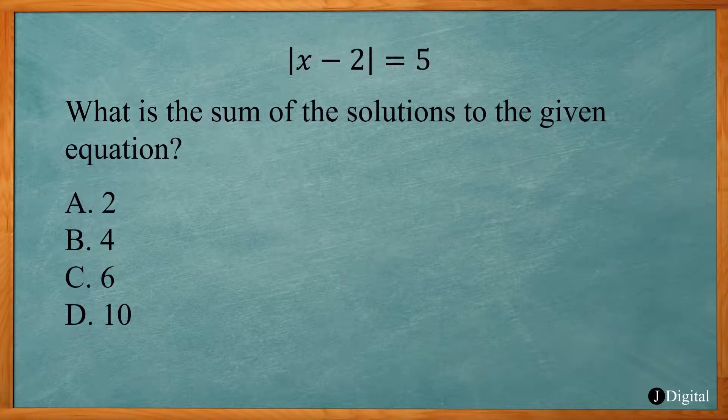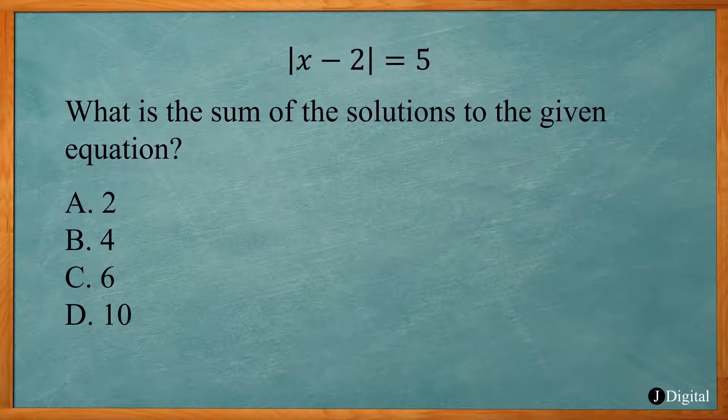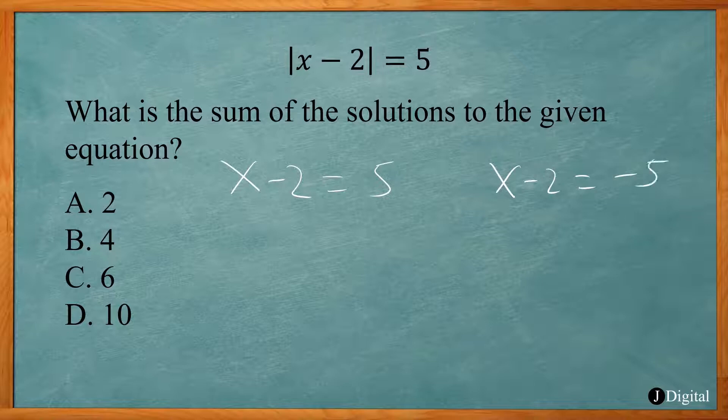Now in this example SAT problem, it's basically the same thing, but it's asking what is the sum of the solutions to the given equation. So again we need to set up two equations: x minus 2 equals 5, and x minus 2 equals negative 5. This is simple enough where you should be able to just look at it and figure what it should be.